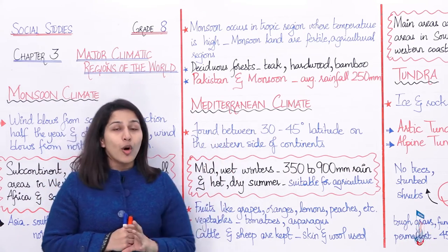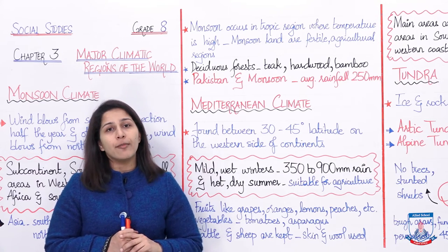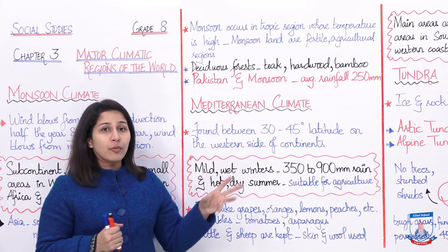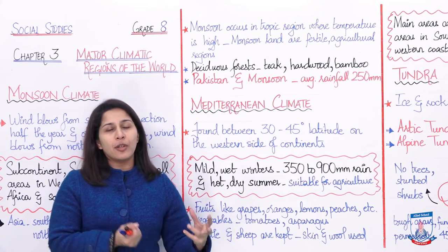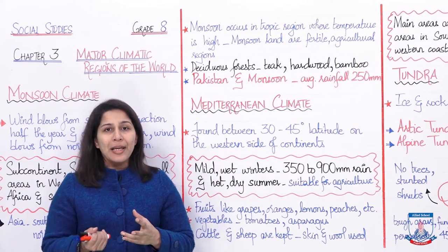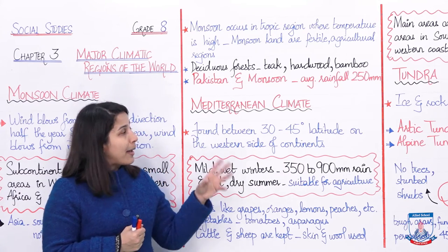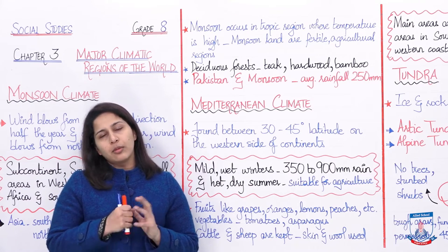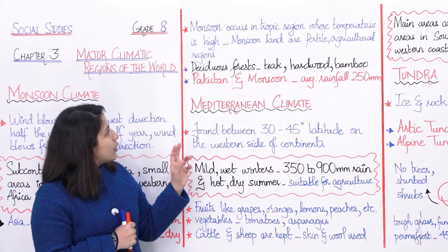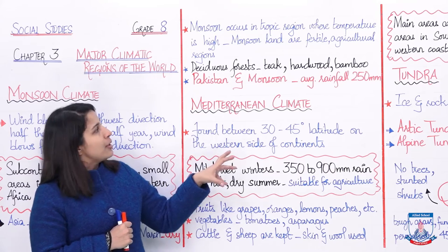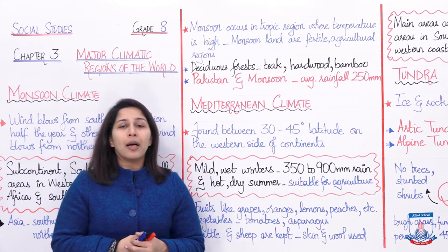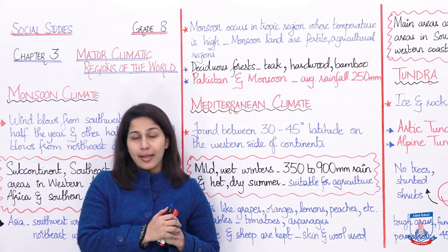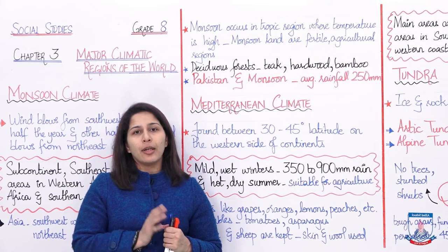Deciduous forests mein major trees are teak, hardwood, and bamboo — in sab ke commercial uses bahut zyada hain. Teak aur hardwood basically furniture, buildings, aur aise cheezein banane mein use hoti hain. And bamboo usually construction ke kamon mein kaam aata hai. So talking about Pakistan's monsoon — jab northwest se wind aati hai April to October, August September mein major rainfall receive hoti hai.